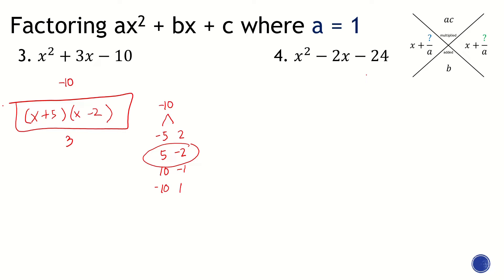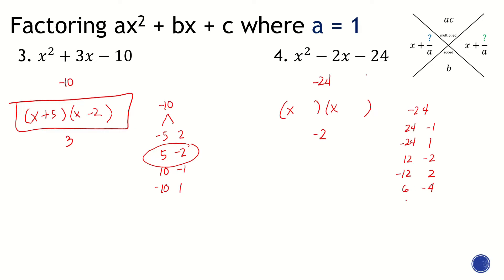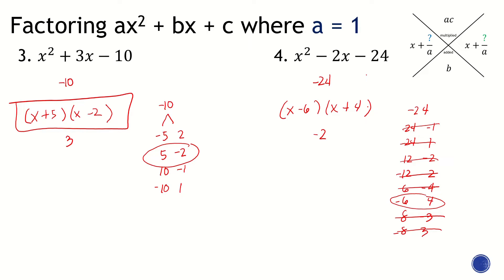Last example where A equals 1. AC is negative 24 and B is negative 2. Pairs that multiply to negative 24: 24 and negative 1, negative 24 and 1, 12 and negative 2, negative 12 and 2, 6 and negative 4, negative 6 and 4, 8 and negative 3, negative 8 and 3. The pair that gives a sum of negative 2 is negative 6 and positive 4. So the answer is X minus 6, times X plus 4. And yes, you can switch their places — X plus 4 and X minus 6 is also correct.